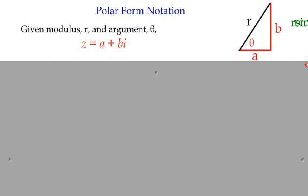We've been looking at the modulus and argument of a complex number, taking the Cartesian form z equals a plus bi, and finding these two other values, r and theta. They represent the distance of the complex number from the origin and also its angle from the positive horizontal axis — that's polar form: distance and an angle.